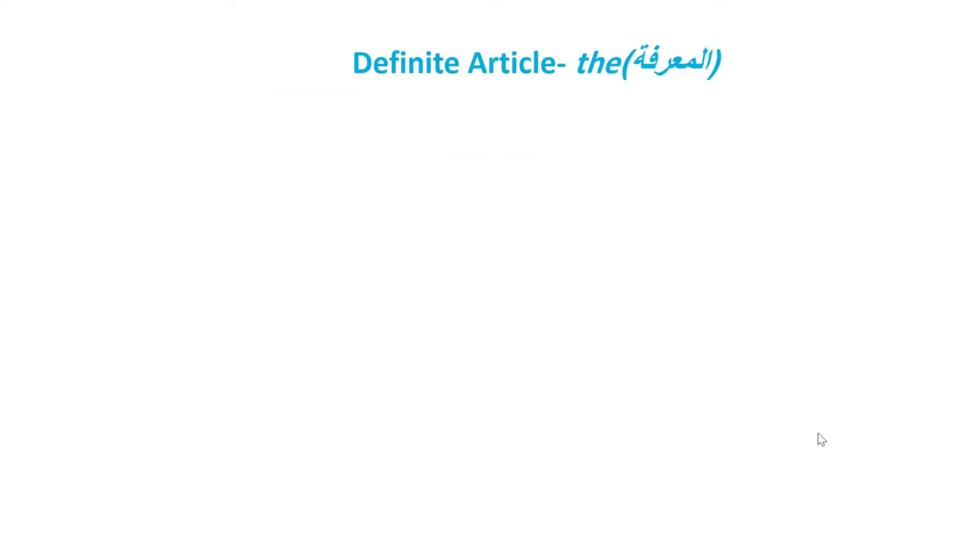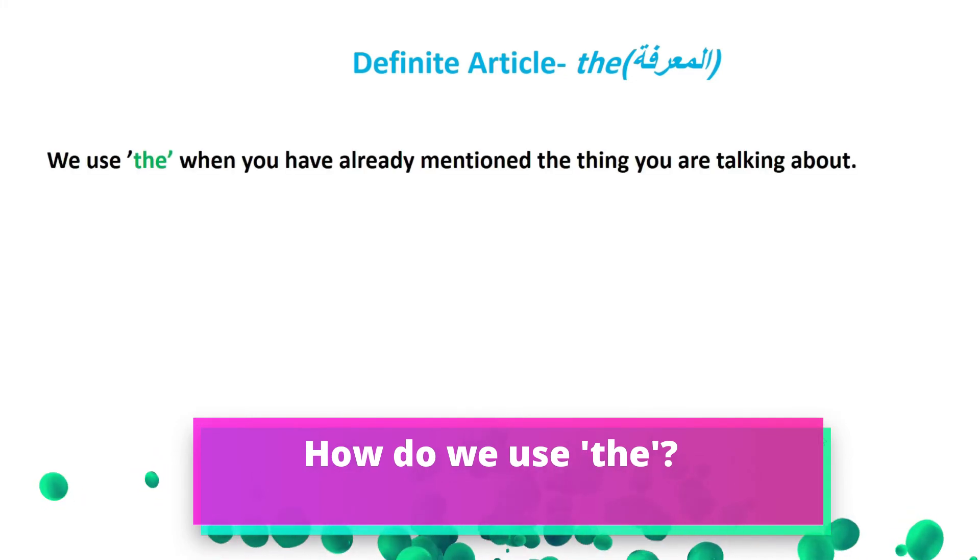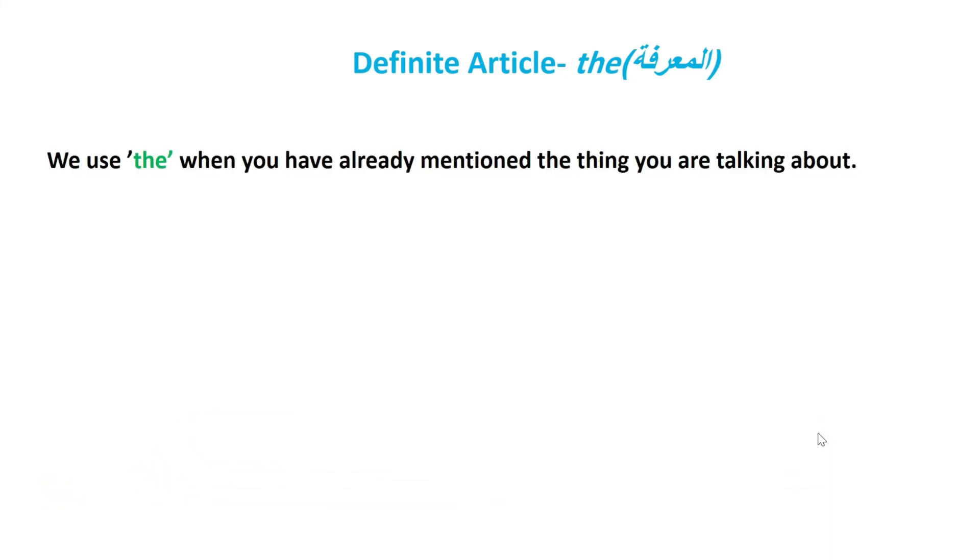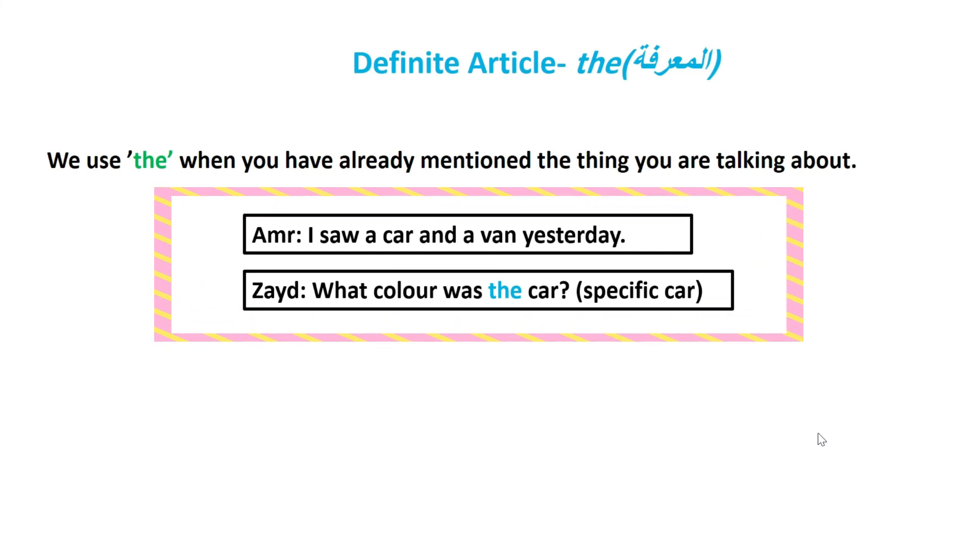As for the definite article 'the,' we use it when you have already mentioned the thing you are talking about. For example, in this conversation, Ahmed says, 'I saw a car and a van yesterday.' Zaid asks, 'What color was the car?' We use 'the' now because it's specific to the car that Ahmed mentioned previously.